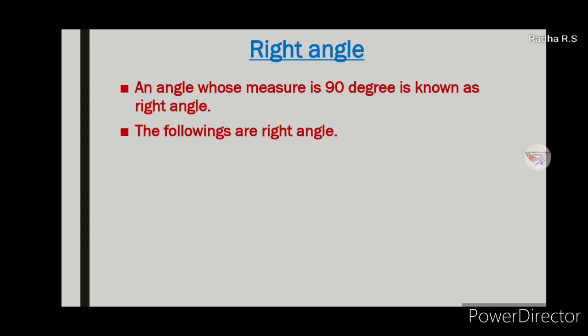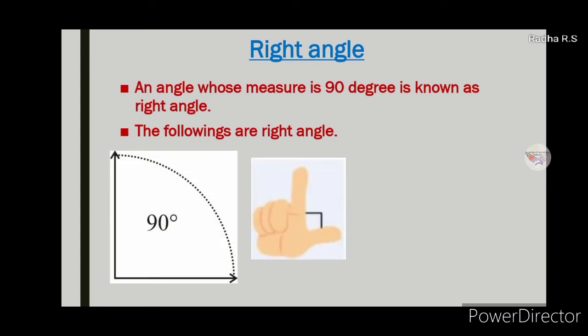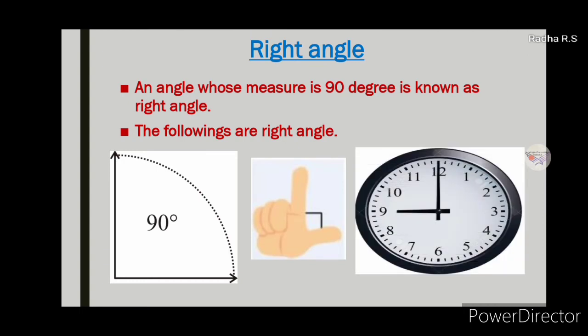The following are right angles. Angle of 90 degrees. Our two fingers also make an angle of 90 degrees, and two hands of clock also show right angle.